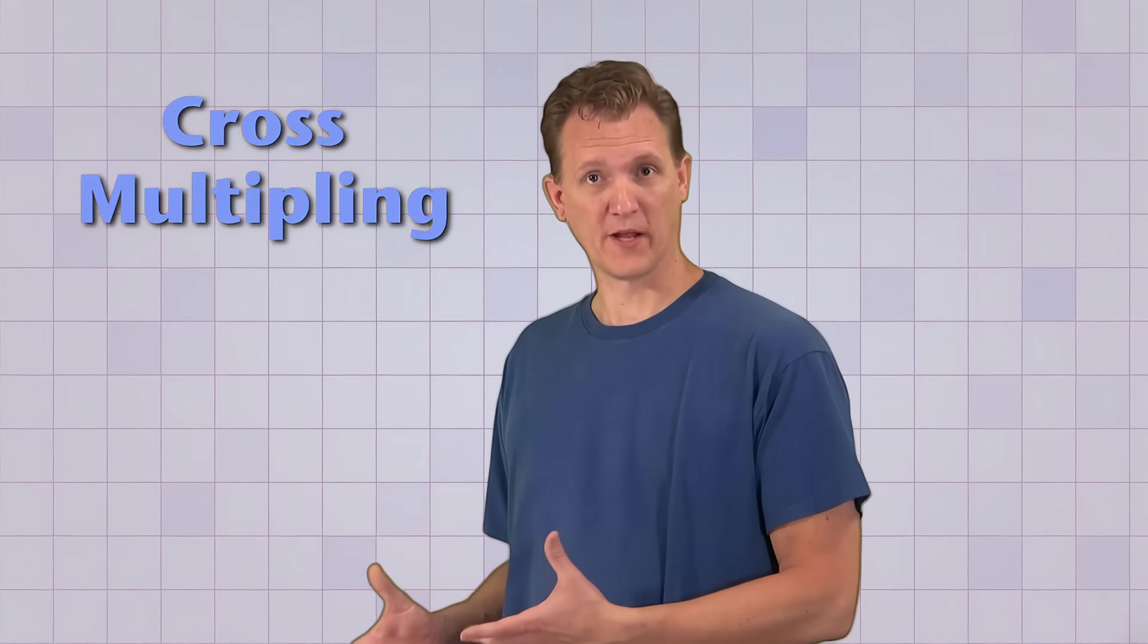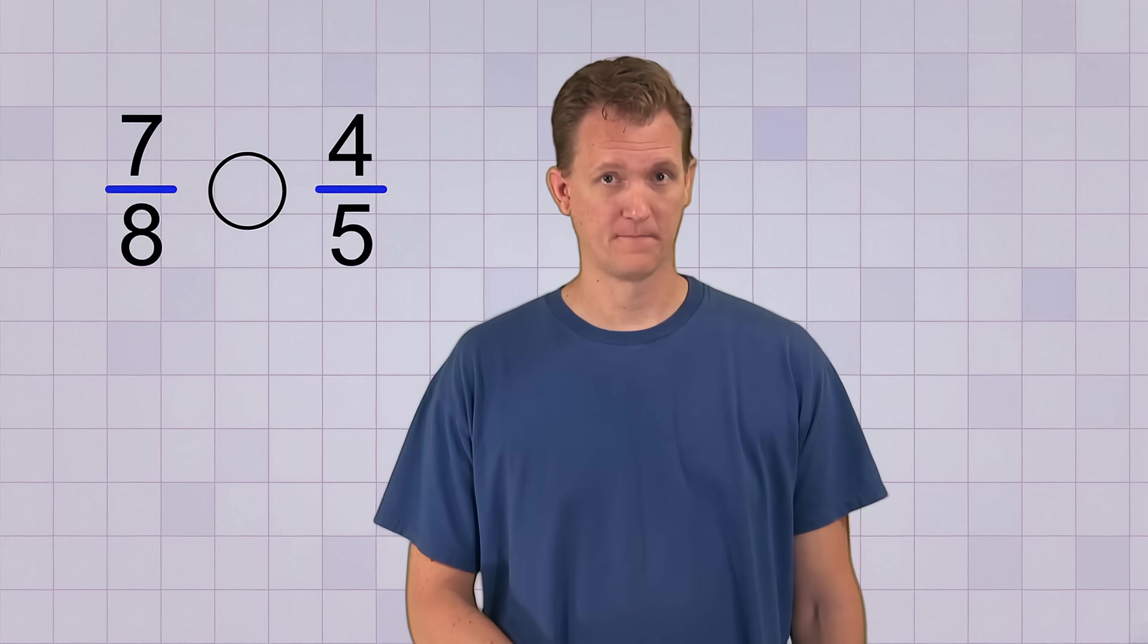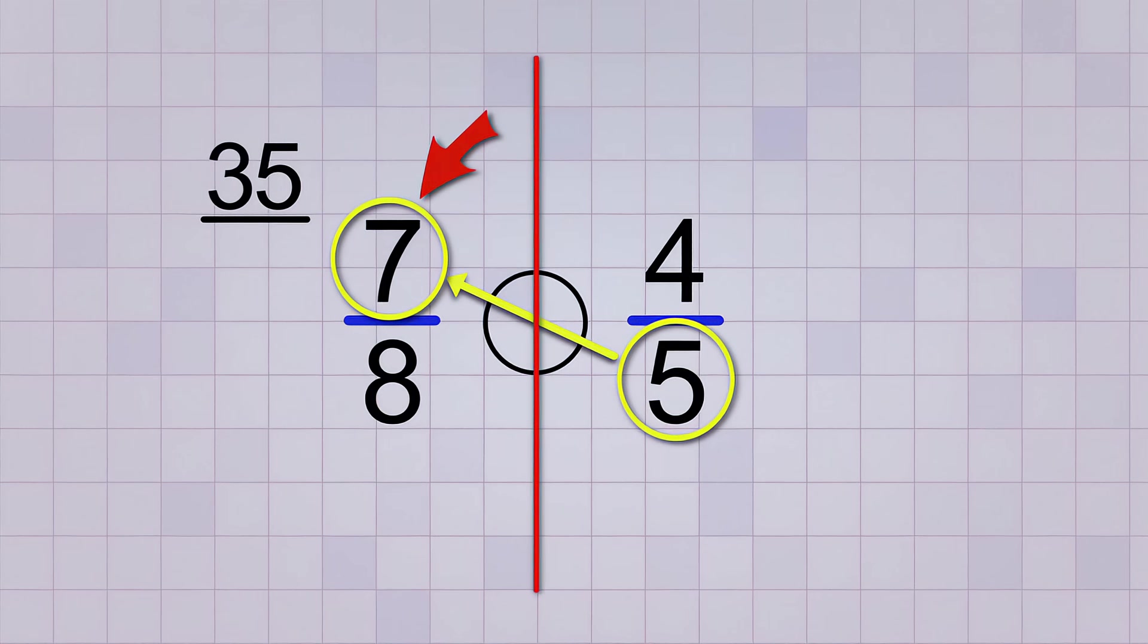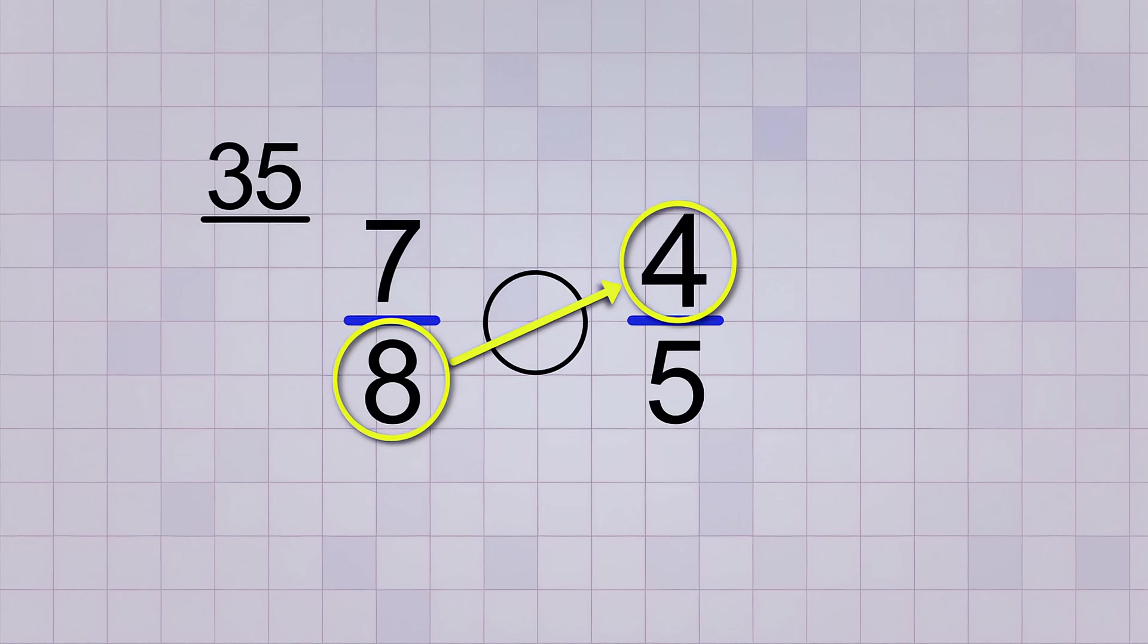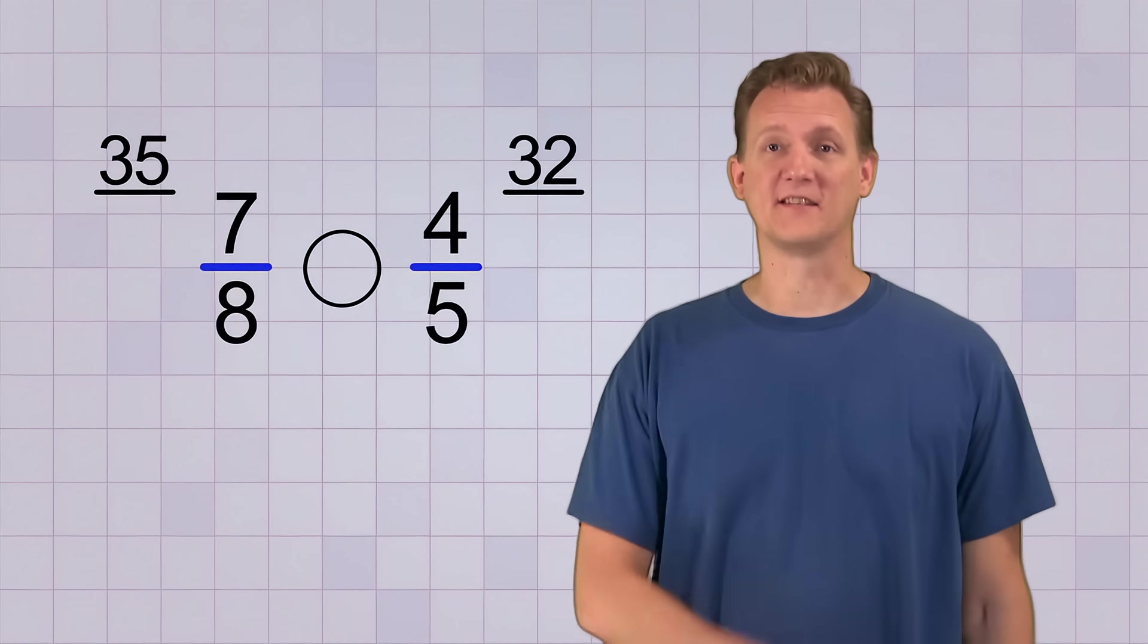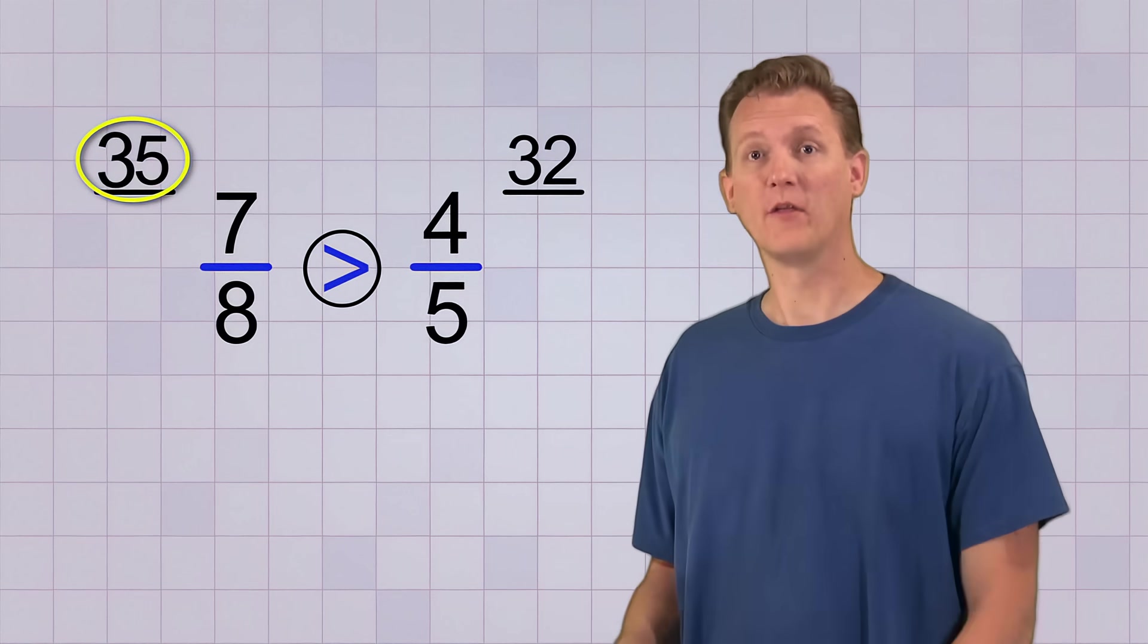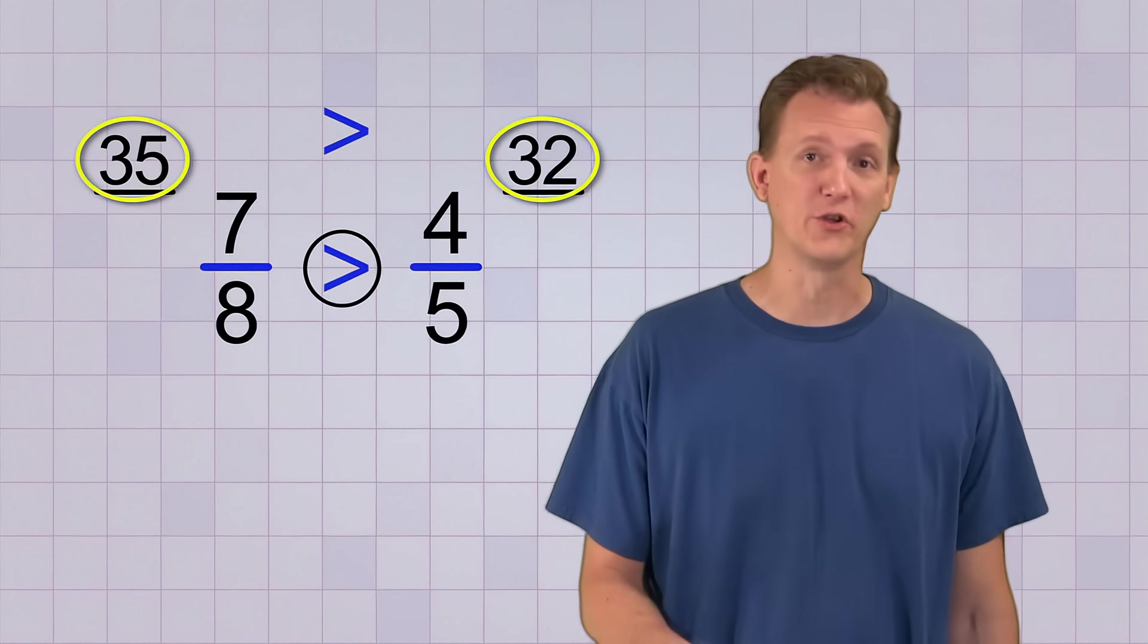Let's try this cross-multiplying method on an example or two. Let's compare the fractions 7 over 8 and 4 over 5. We start by multiplying the second fraction's bottom number, 5, by the first fraction's top number, 7. And that gives us 35 for the new top number on this side. You'll always keep the answer on the side of the top number that you multiplied. Now for the other side. The bottom number, 8, times the top number, 4, gives us 32 for its new top number. Aha! Now it's easy to see that the fraction 7 over 8 is greater than the fraction 4 over 5, because its new top number, 35, is greater than the other new top number, 32.